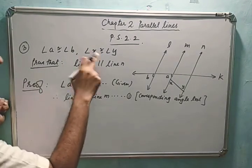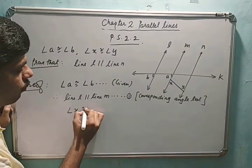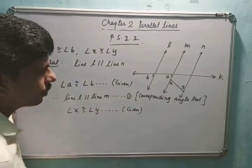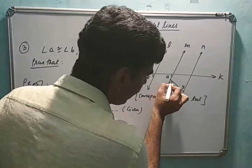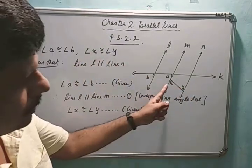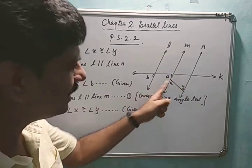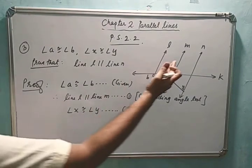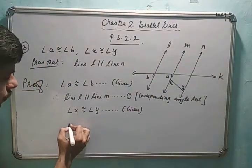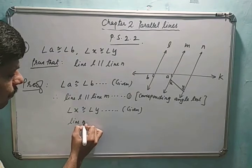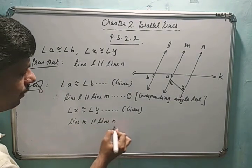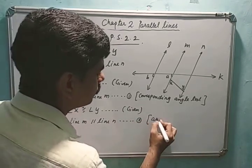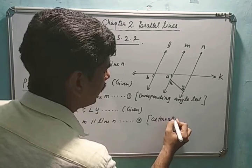Now look at the second piece of given data: angle x is congruent to angle y — reason: given. If you look at angle x and y, they are alternate angles, meaning they are on either side of the transversal. So if alternate angles are congruent, I can say m and n are parallel. Therefore, line m is parallel to line n — reason: alternate angle test. This is statement number 2.